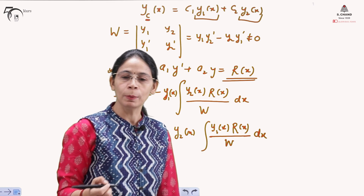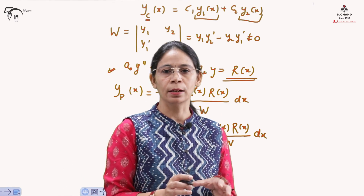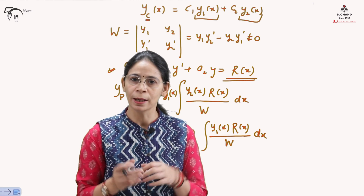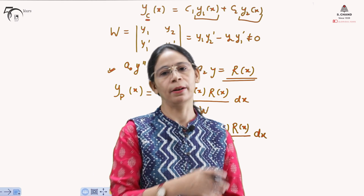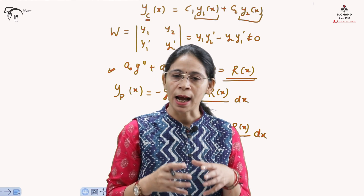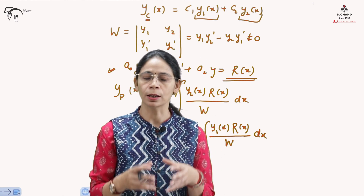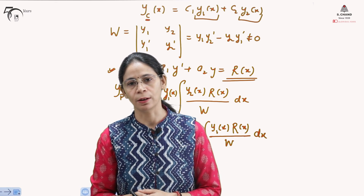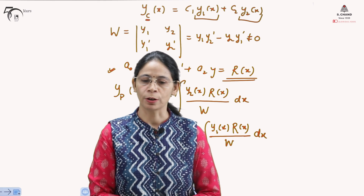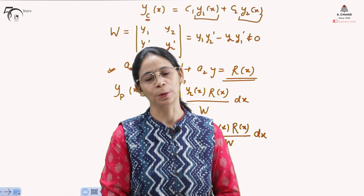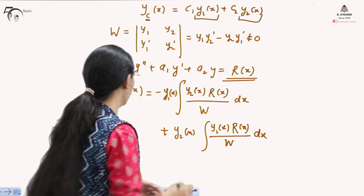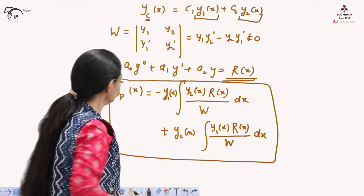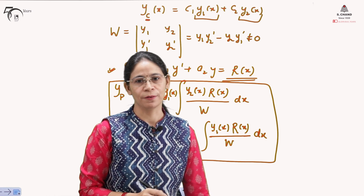If the Wronskian W were to become zero, the particular integral could not be written using the method of variation of parameters. However, this situation will not arise because in that case we would not be able to write the complementary function either. So as soon as we establish that Y₁ and Y₂ form the complementary function, this method can be used to find the particular integral.